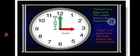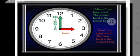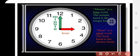The minute hand is a longer hand — it tells us about the minutes. And the hour hand tells us about the hours.